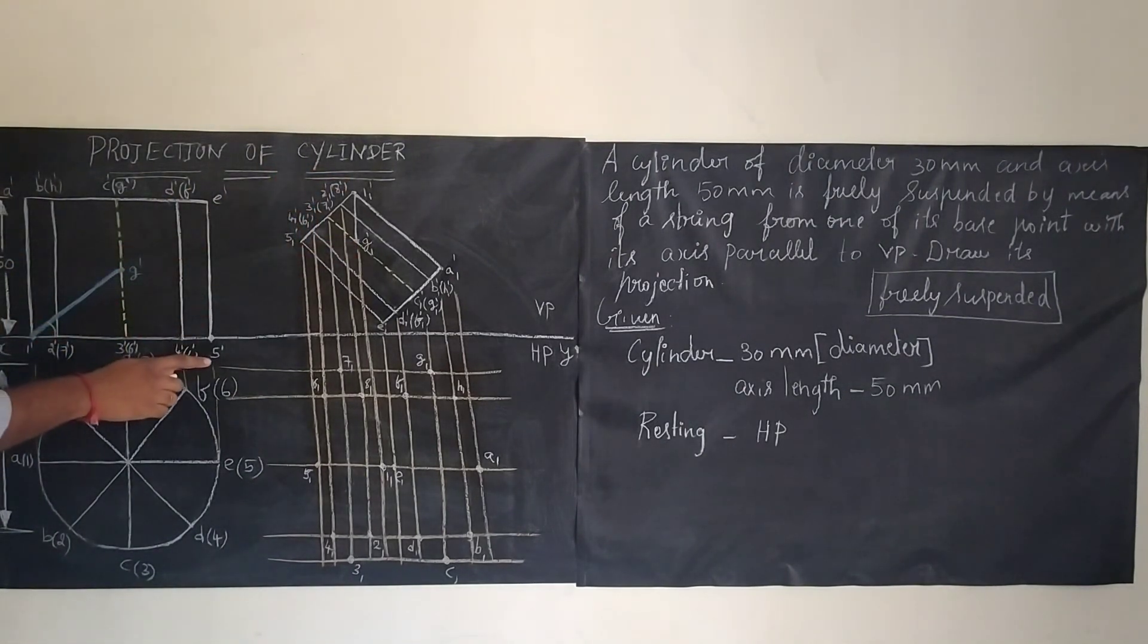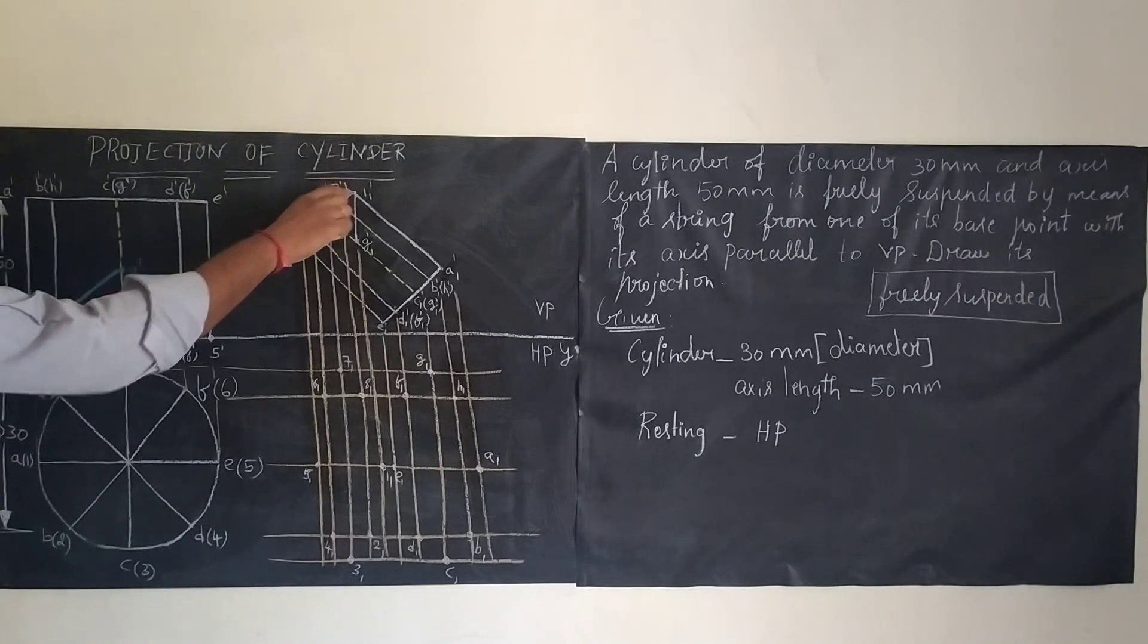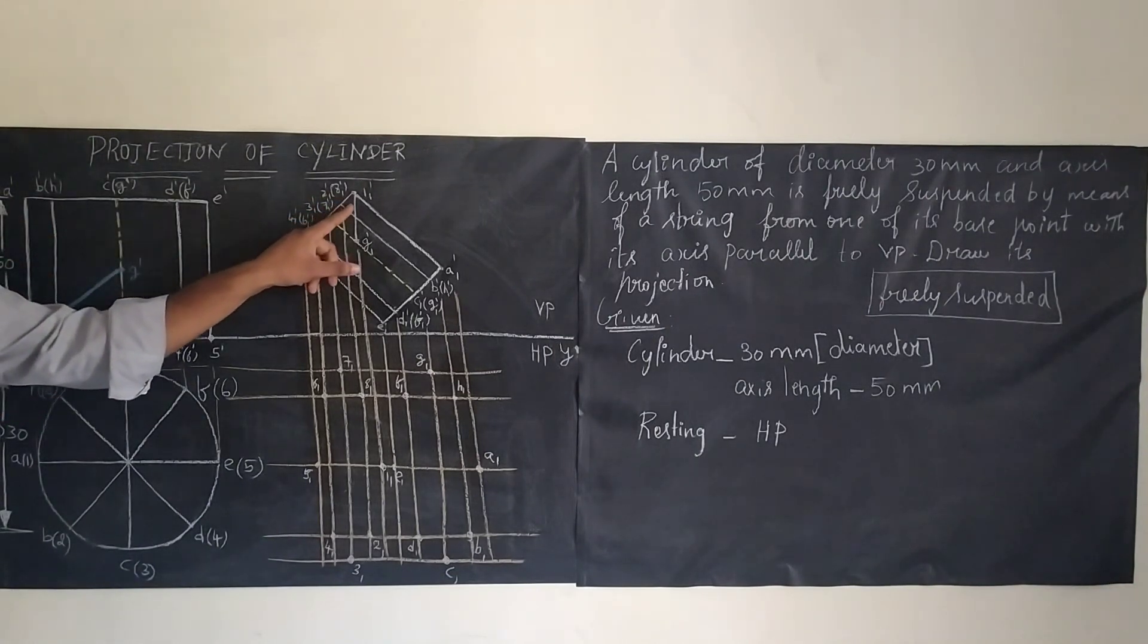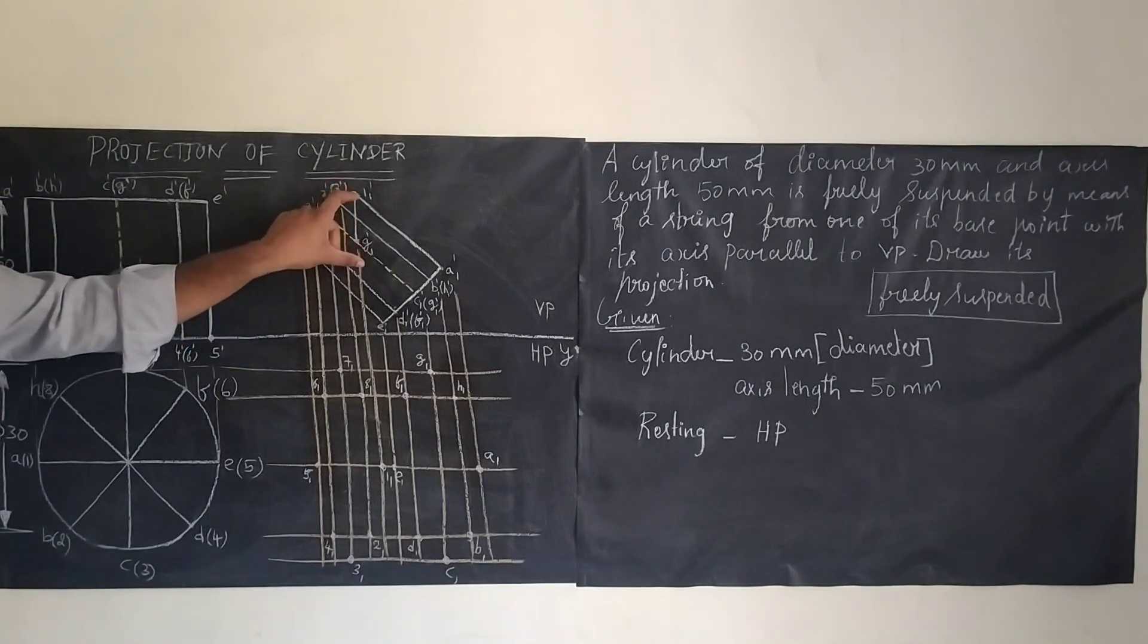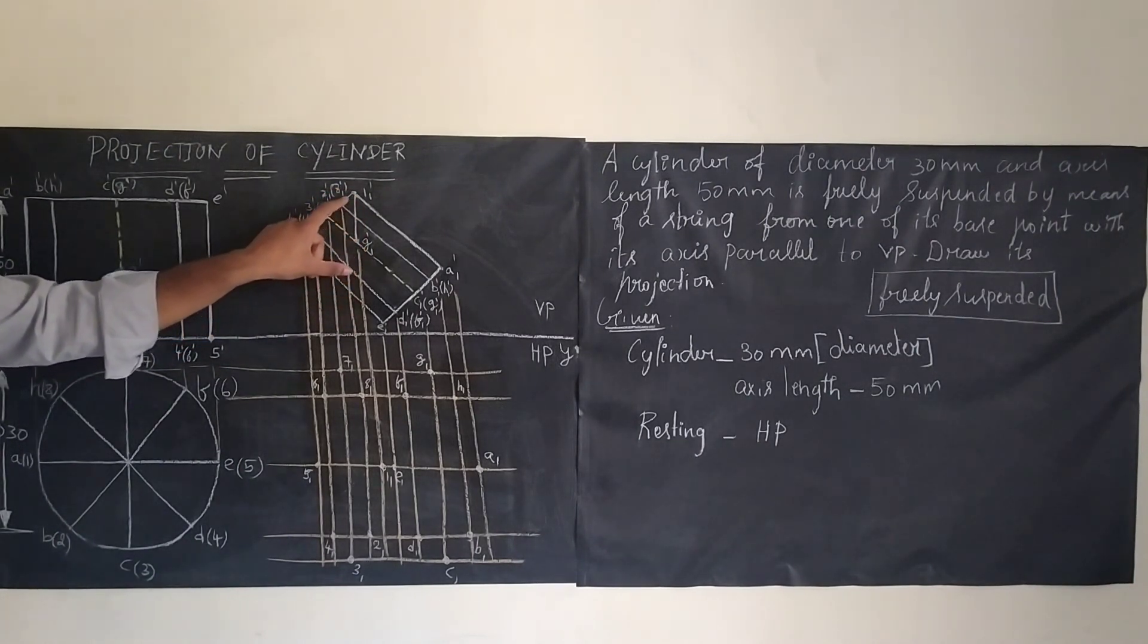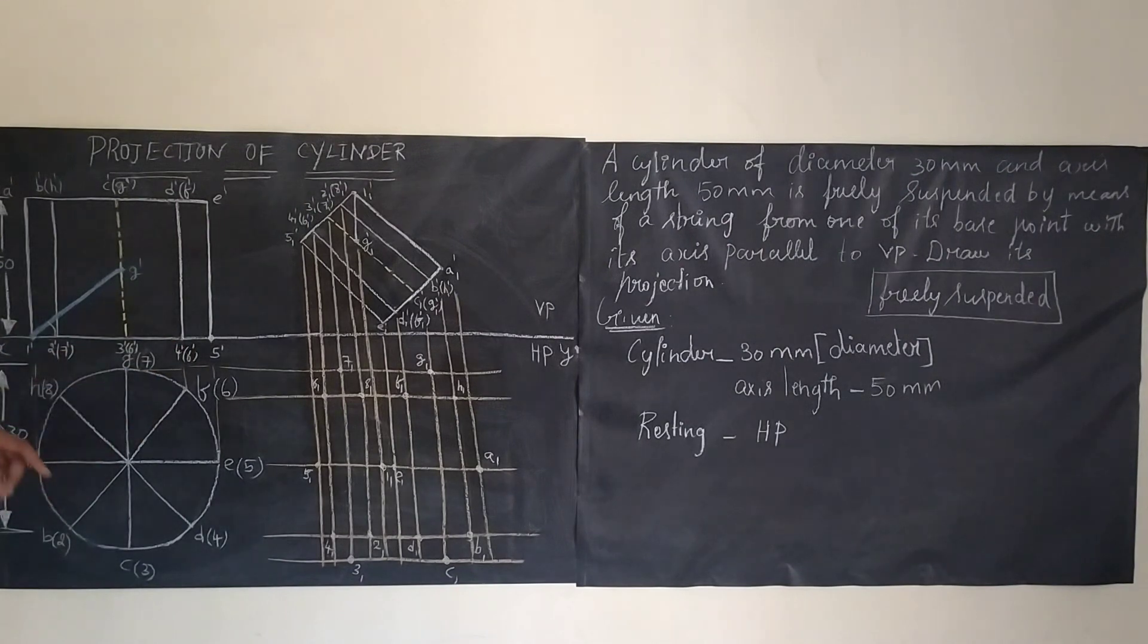Then measure this angle. For drawing 5 dash, if you want to draw this line, we require this angle. Keep your protractor here with 1 dash G dash as your base. Just measure the angle. For that angle, keep your protractor at this point 1 dash G dash as your center. For that angle, you draw this line. The length of the line will be how much length you are having here. For the same length, you will be drawing.